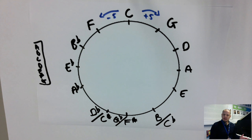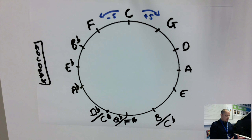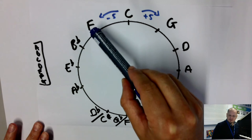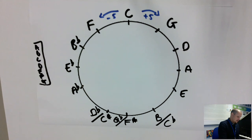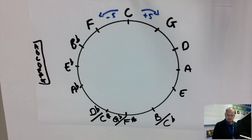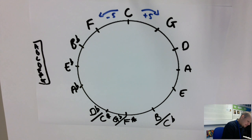We'll deal with enharmonic equivalents in a later video. So we've worked out all our major keys: seven sharp keys and seven flat keys. Now we need to work out the minors, so I'm going to do it in the inner circle. What we can do with the minors is just count down three from the major.